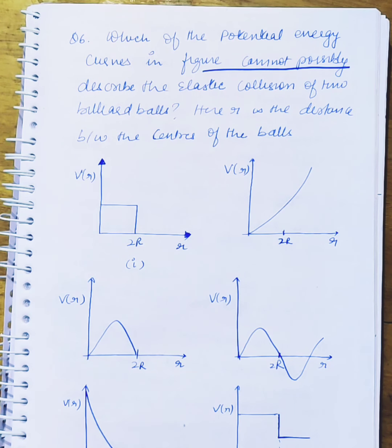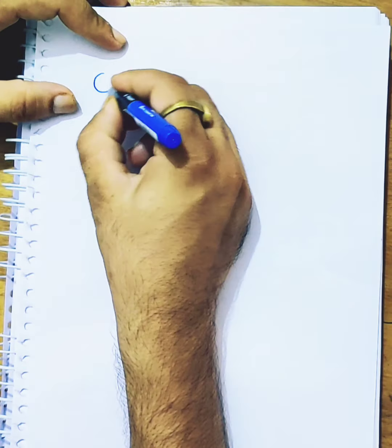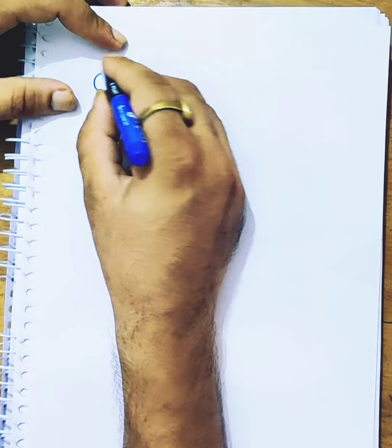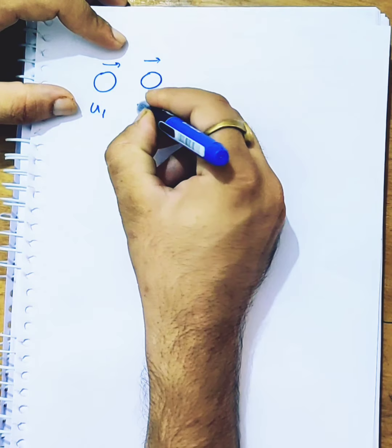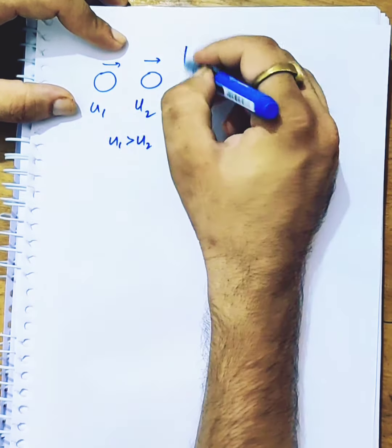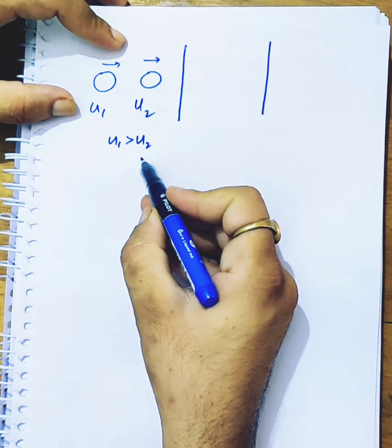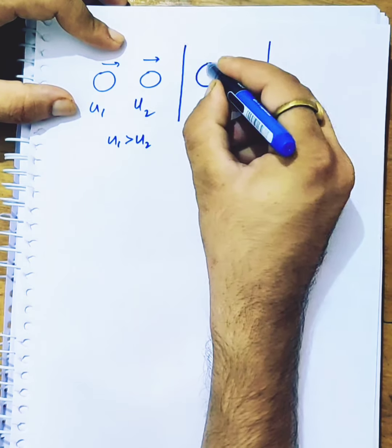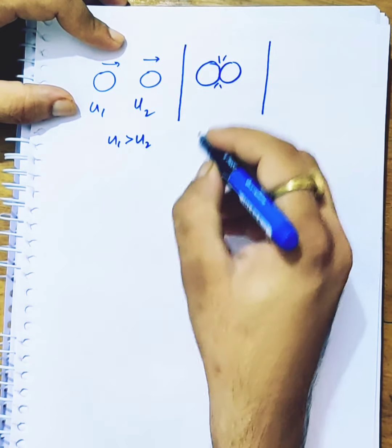Here, R is the distance between the centers of the two balls. Now, we have to do the elastic collision with balls. These are the balls. They have to do the elastic collision with the initial condition that U1 should be greater than U2. After a point, because these conditions are satisfied, these balls collide.